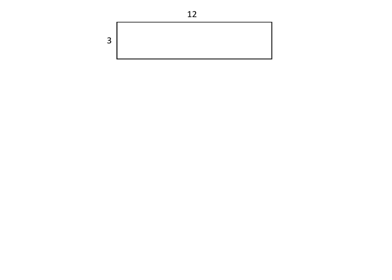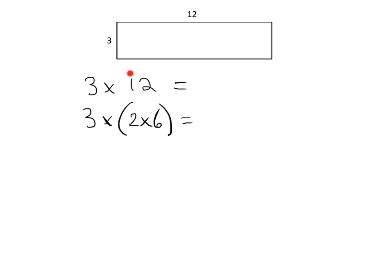So suppose we have this 3 by 12 rectangle. We know that 3 times 12 has an answer. But what we could do is say, what about 3 times 2 times 6? Does that have the same answer? And the answer is yes, because we took 12 and changed it to 2 times 6, which is still 12. So these two should have the same product.